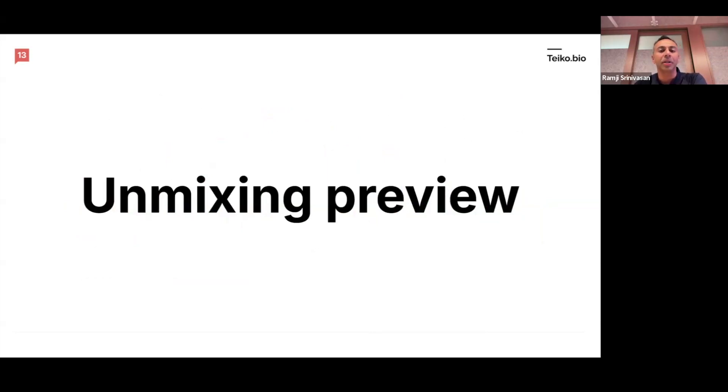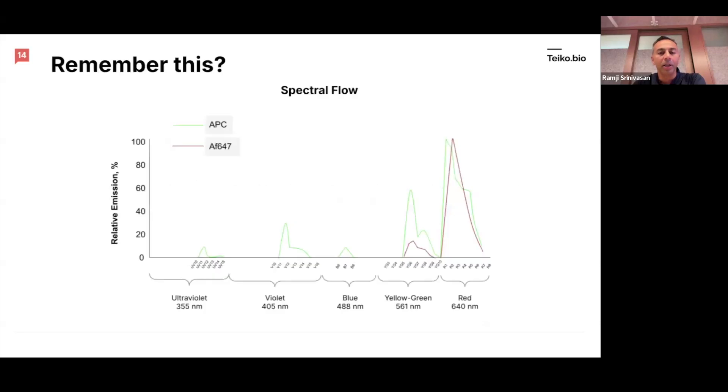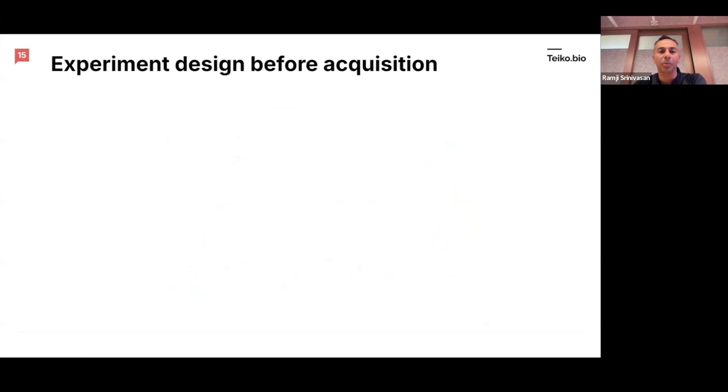So that gives you a sense of why spectral flow might be more useful than conventional flow. But we talked about unmixing, and we'll give you a quick preview of how unmixing works underneath the hood. This isn't going to be a full tutorial, but just a little bit of backgrounder. So you remember this curve that we showed from spectral flow? We showed APC and Alexa Fluor 647. So remember, this is ultraviolet, violet, blue, yellow, green, red. And this is APC and AF 647. We're going to take a more simplified example.